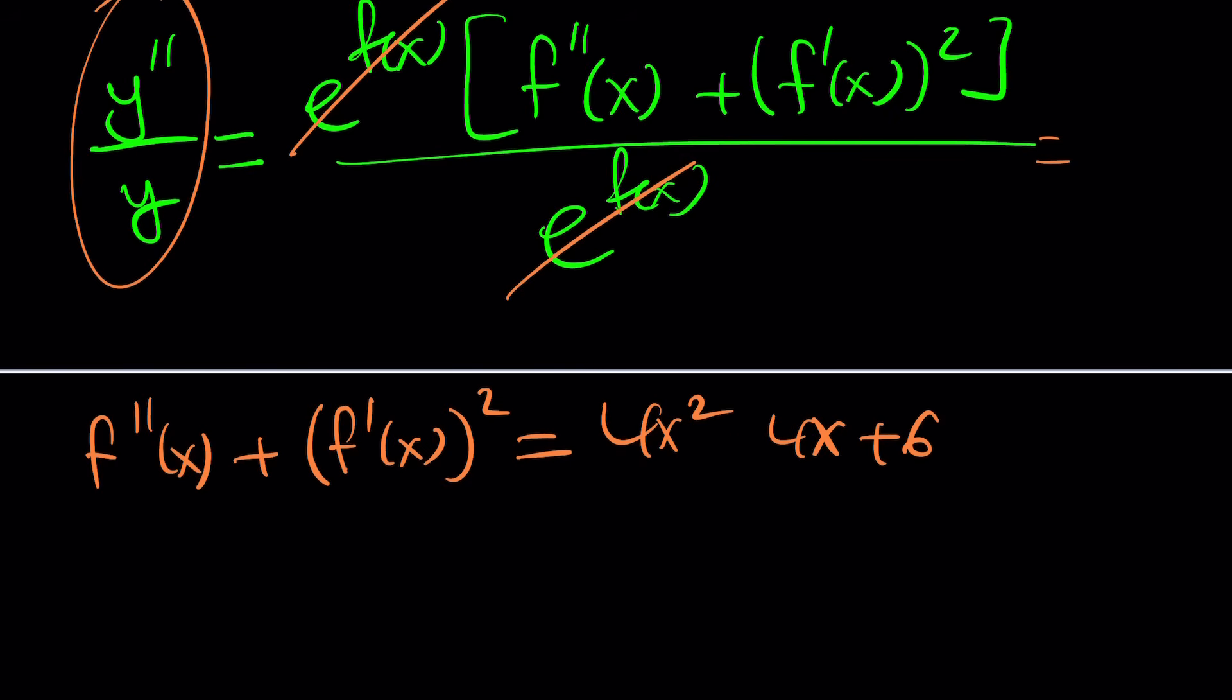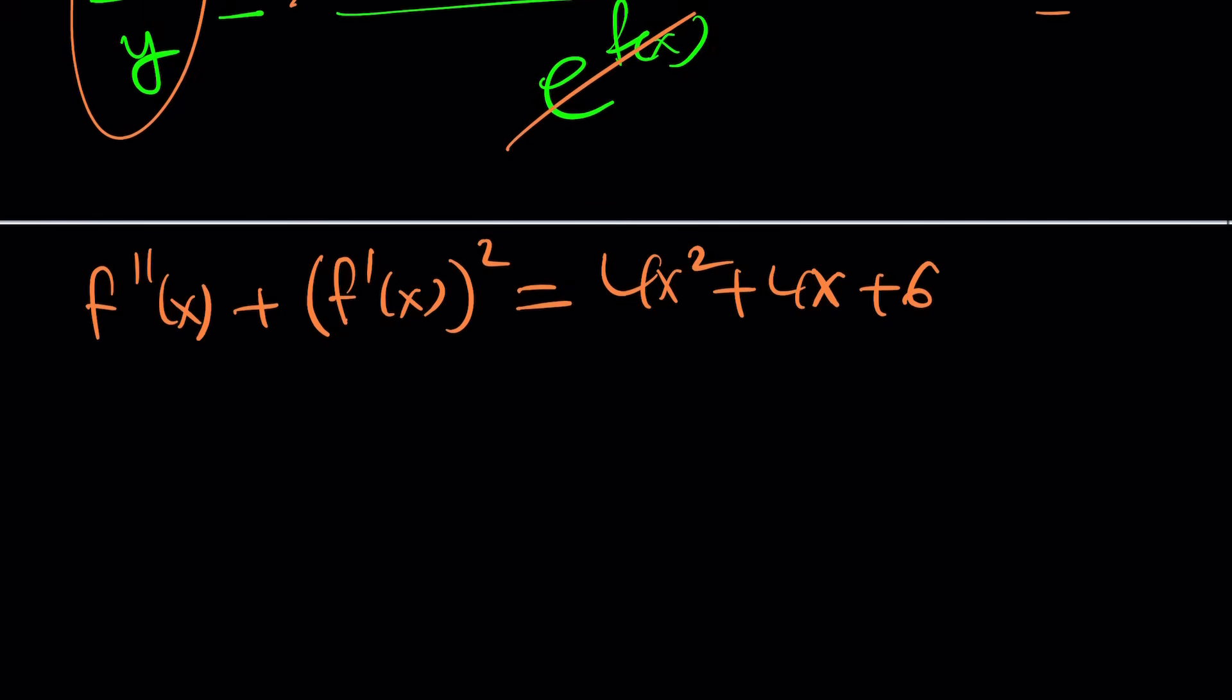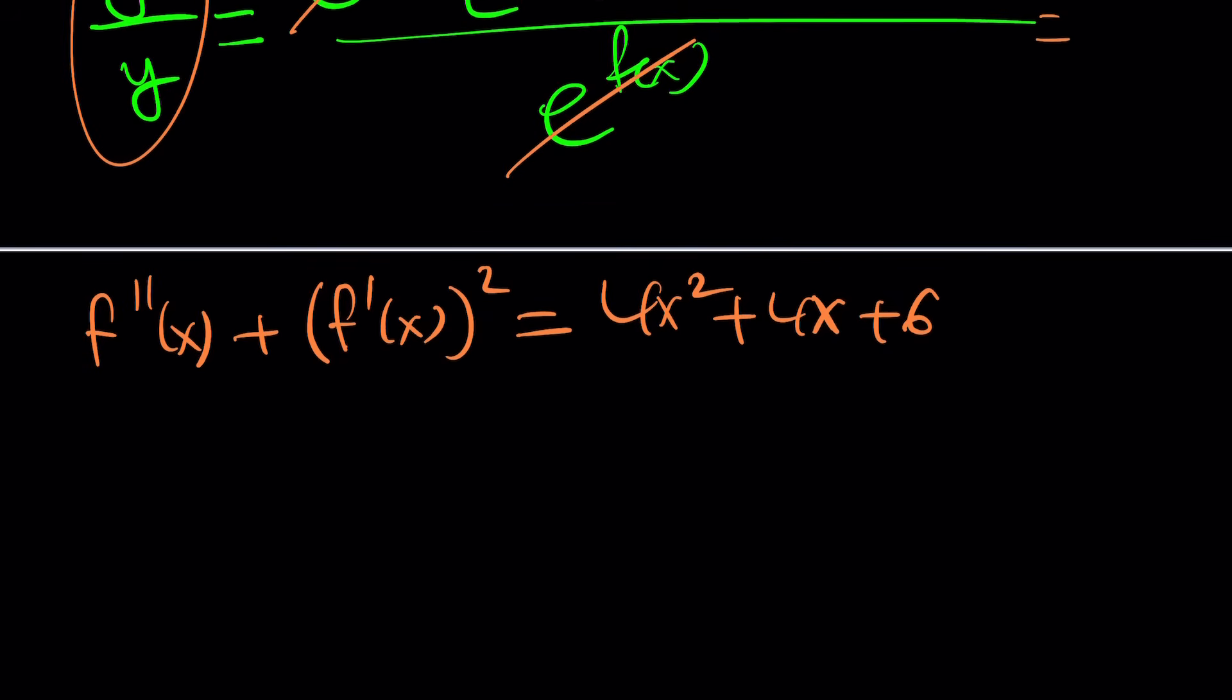How are you going to solve it? Well, at least we know that this is equal to something. So here's what we have. f double prime of x plus f prime of x squared is equal to y double prime over y, which is 4x squared plus 4x plus 6. Awesome. Now, our goal is going to be to solve for f, obviously. But this is a nonlinear differential equation, a hard type. Don't worry. We're going to make some assumptions to simplify things a little bit here.